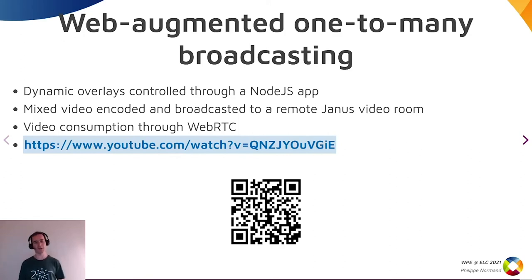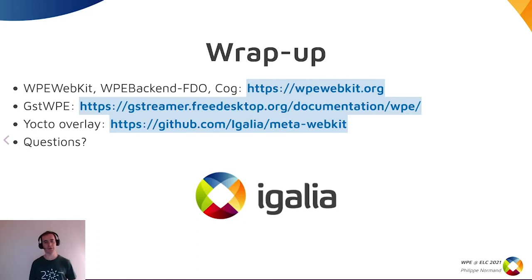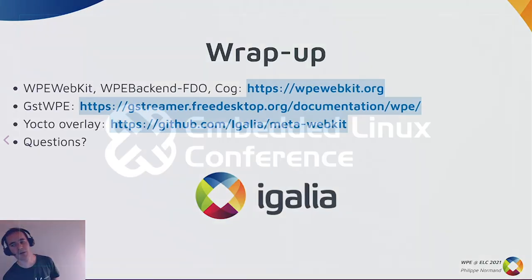That's it. There are some links: on wpe-webkit.org you can find all the tools you need for WP. You can also see the gst-wpe docs on the GStreamer website to see how to use and configure it in pipelines. The overlay demo is maintained in our GitHub space. Thank you, and I'm happy to answer questions.